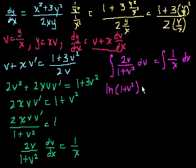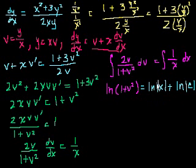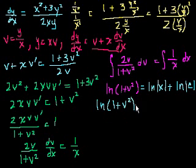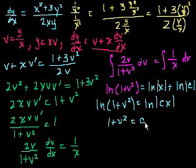We can write the constant as the natural log of the absolute value of some constant c, so the whole equation becomes the natural log of 1 plus v squared equals the natural log of the absolute value of cx. Since the natural logs are equal, we can say that 1 plus v squared is equal to cx.